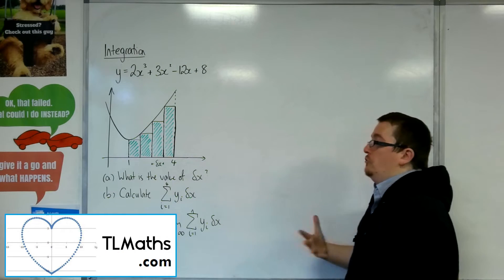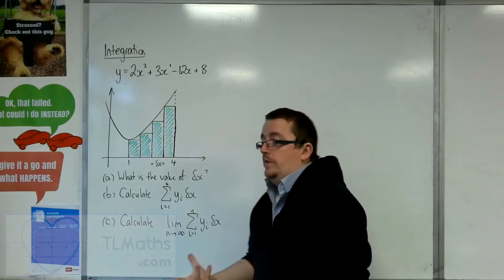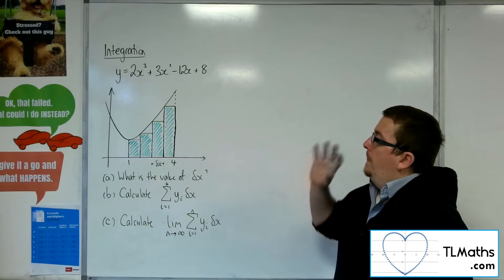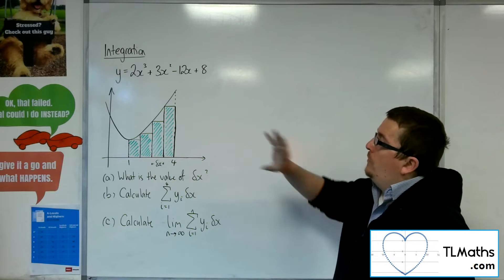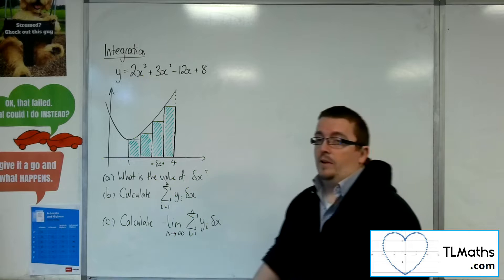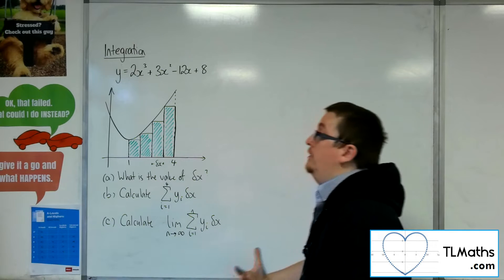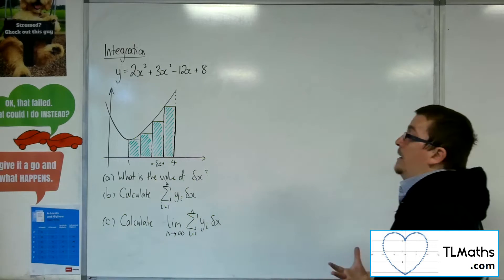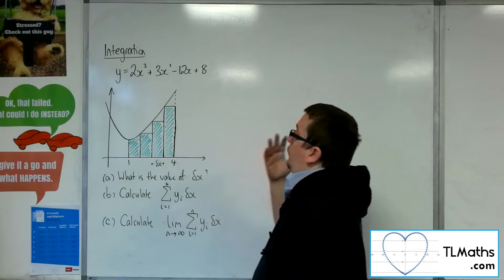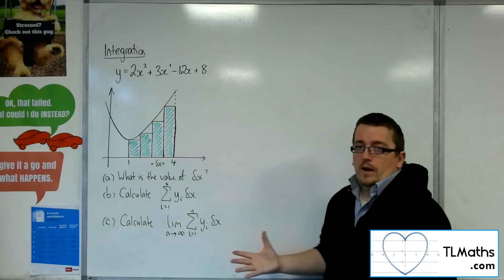In this video we're going to be looking at integration as a limit of a sum of areas. We've got the curve y equals 2x cubed plus 3x squared minus 12x plus 8. What I'm going to try and do is estimate the area underneath the curve between x equals 1 and x equals 4 using these four rectangular bars.